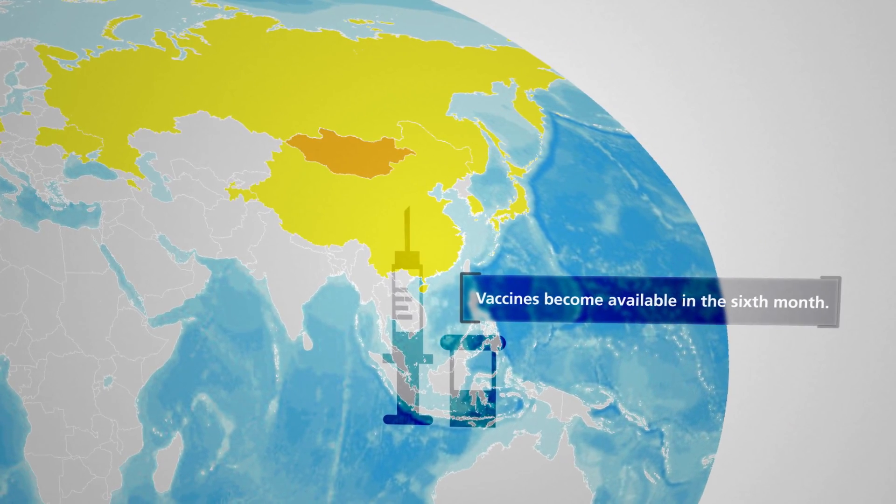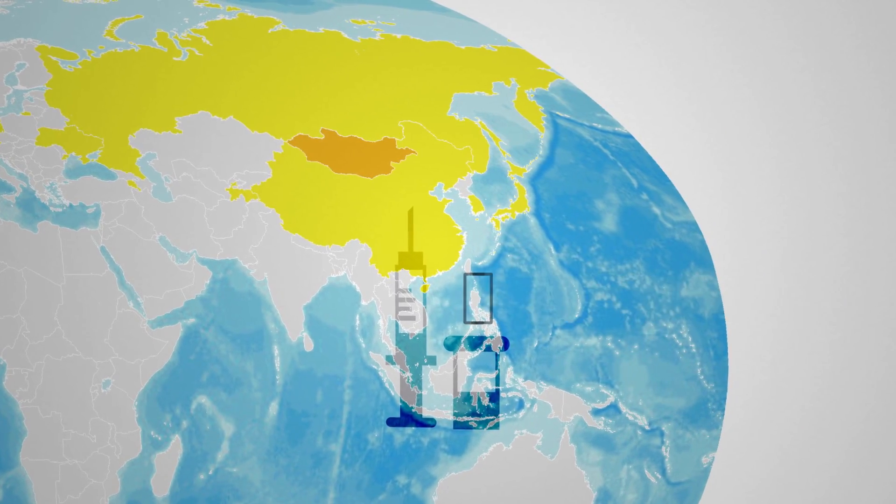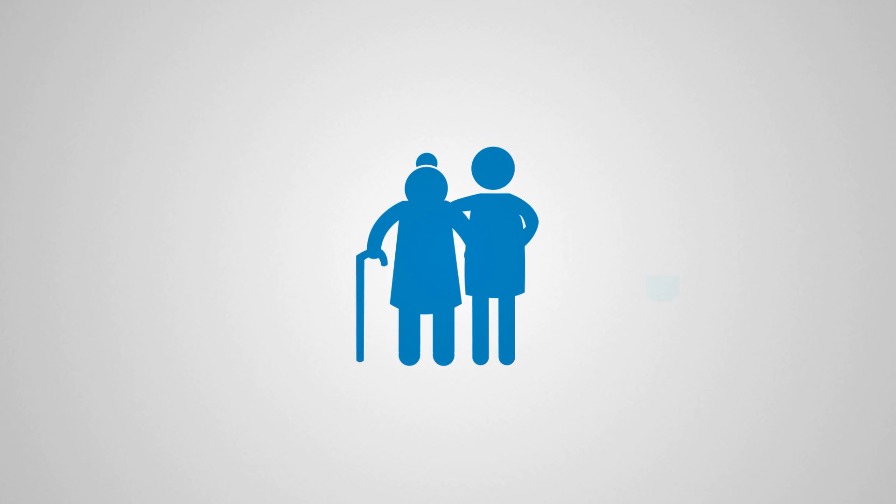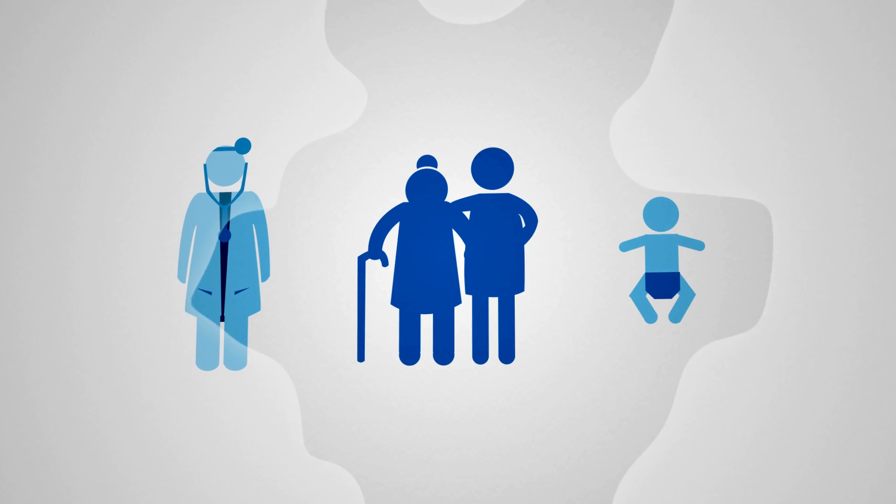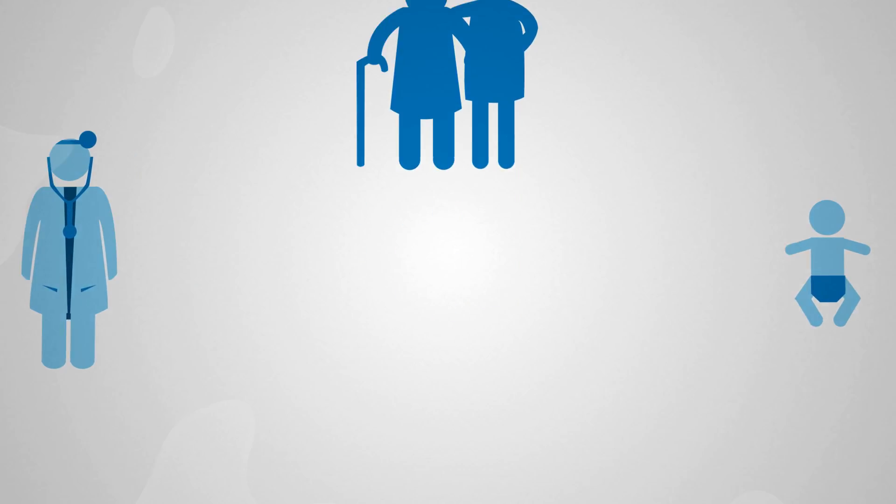Vaccines begin to come online only in the sixth month. The first batch is reserved for high-risk individuals such as those with underlying medical conditions, children, and health care workers who are generally considered to play a crucial role in the spreading of influenza.